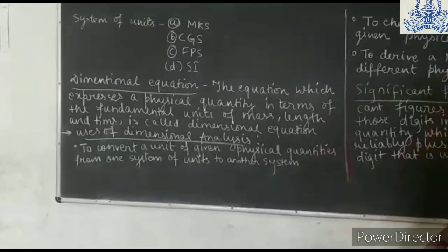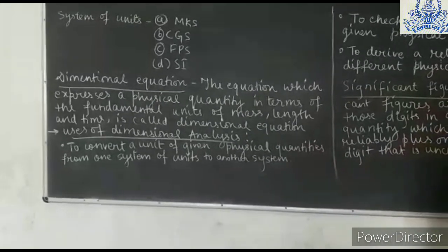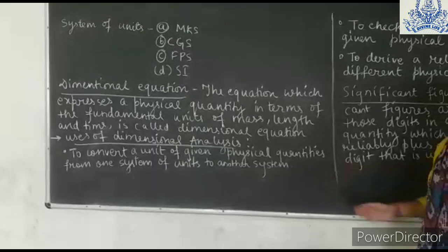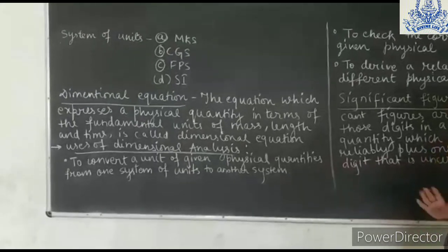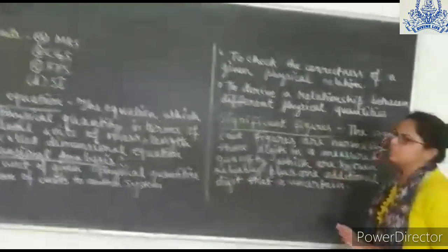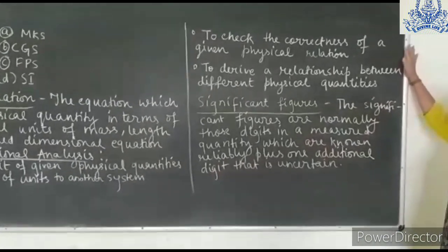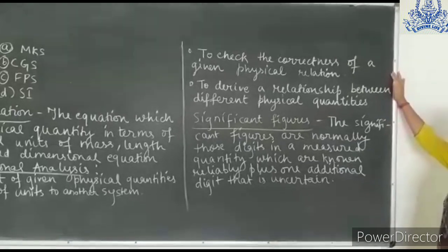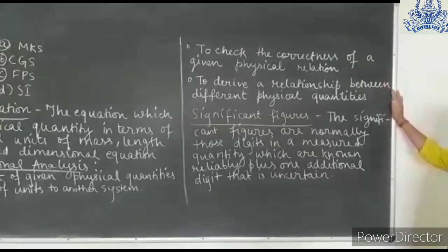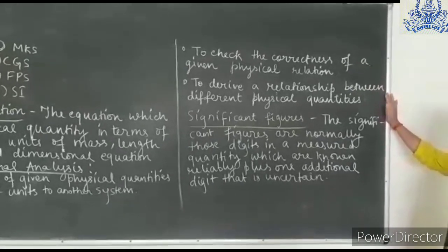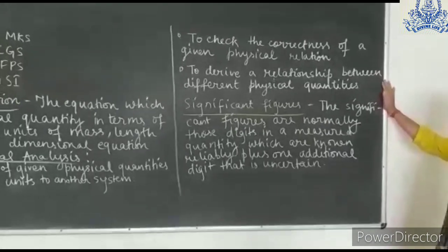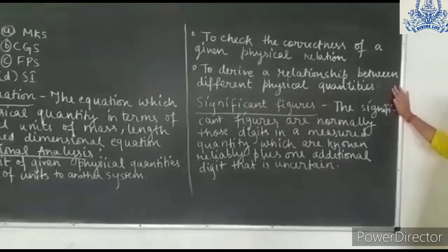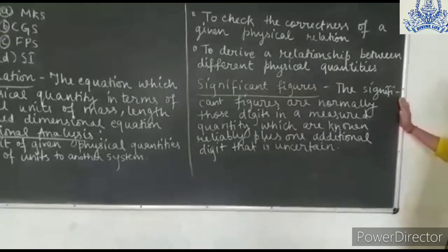What are the uses of dimensional analysis? First, to convert a unit of a given physical quantity from one system of units to another. Second, to check the correctness of a given physical relation. Third, to derive the relationship between two or more systems of units. The next topic is Significant Figures.